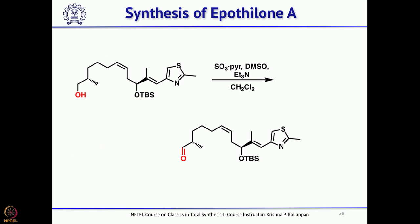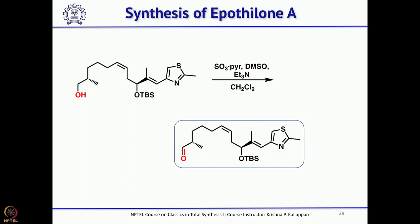Oxidation with SO3–pyridine and DMSO gave the aldehyde. For the southern hemisphere ethyl ketone, it was treated with excess LDA and quenched with this aldehyde. At this point, almost all carbons of Epothilone A are in place.